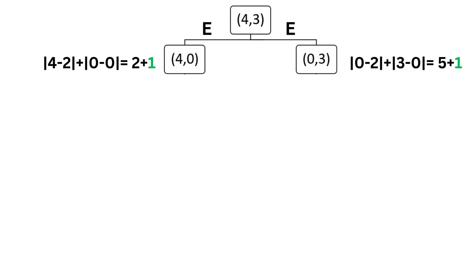Starting from the initial state where both jugs are full, we have two options: empty jug A or empty jug B. This gives us states (4, 0) and (0, 3). The heuristic value for (4, 0) is 2, and for (0, 3) it is 5. The f-cost for A* combines actual cost and heuristic cost: for (4, 0) it is 2 plus 1, and for (0, 3) it is 5 plus 1.